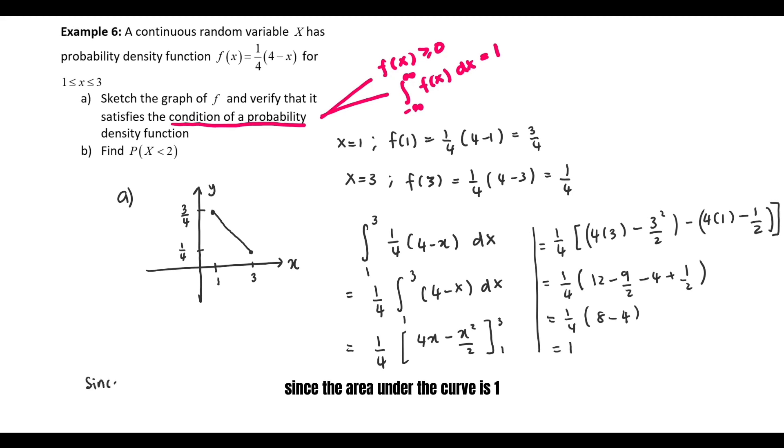Since the area under the curve is 1, we can say that f is a probability density function.